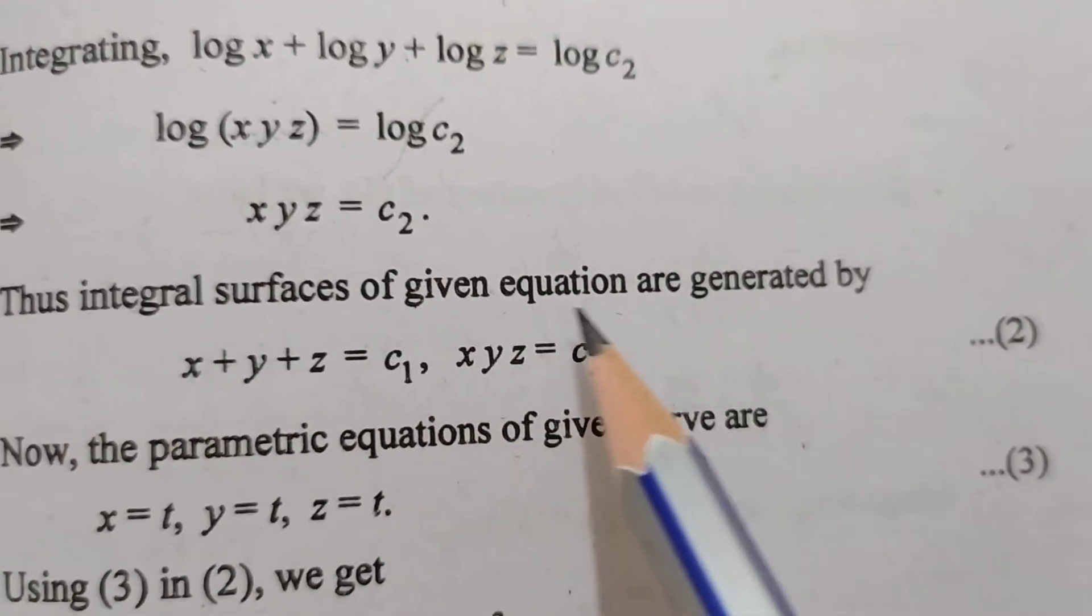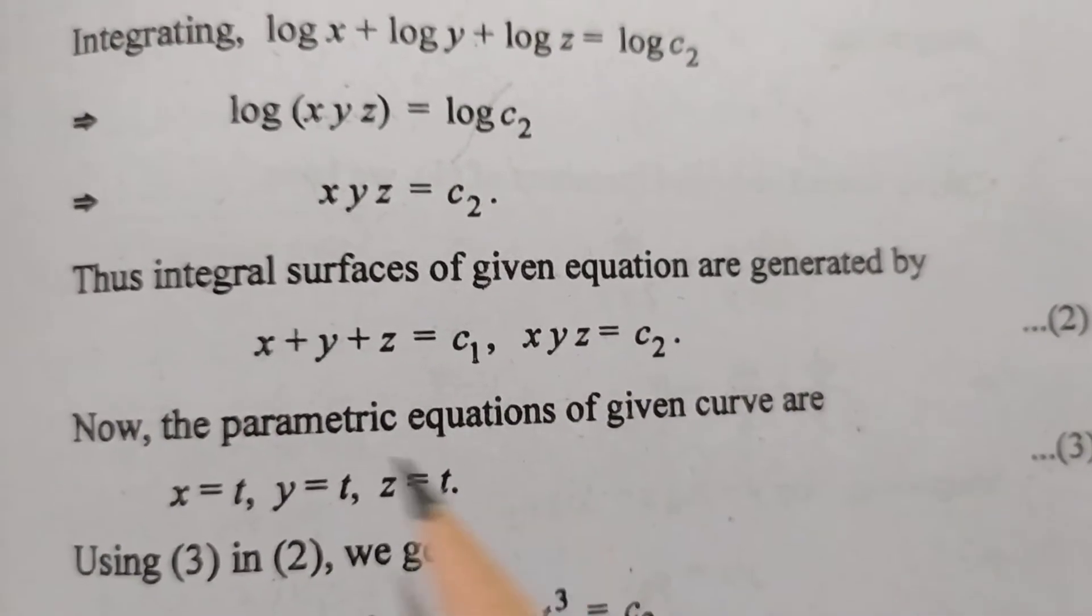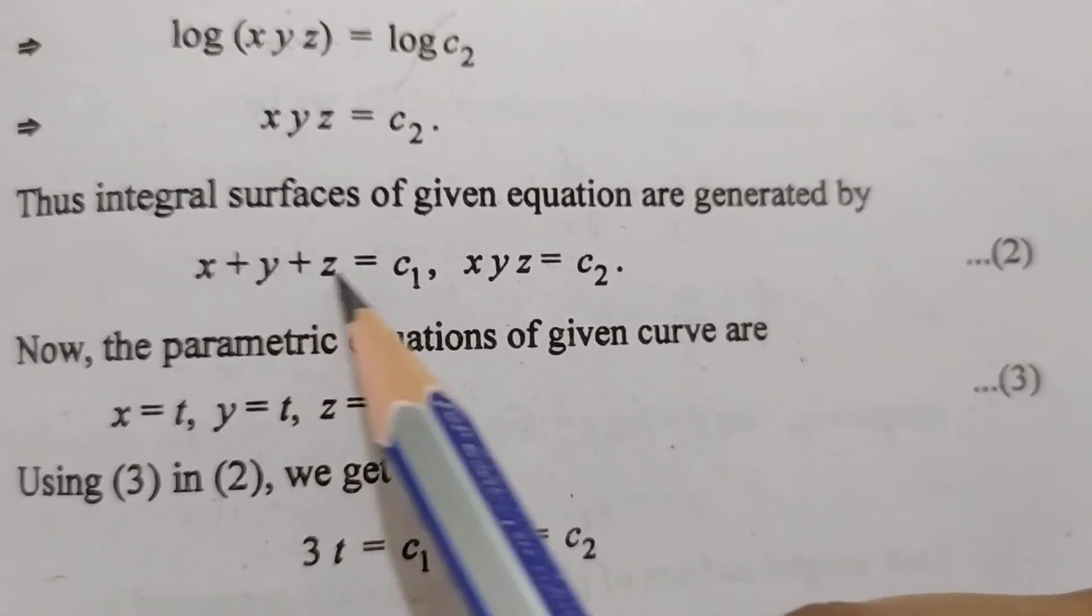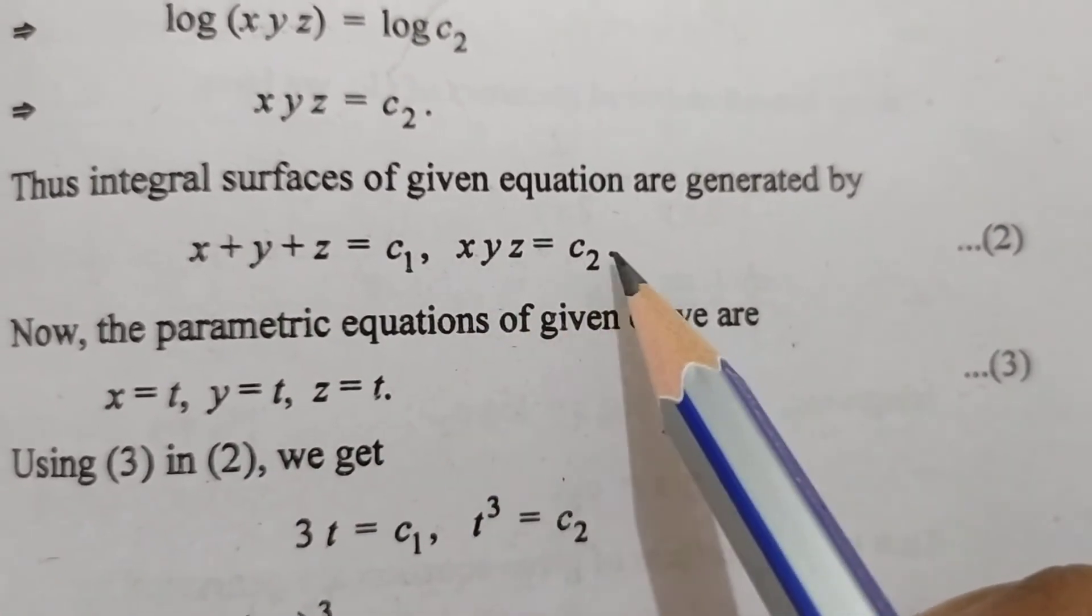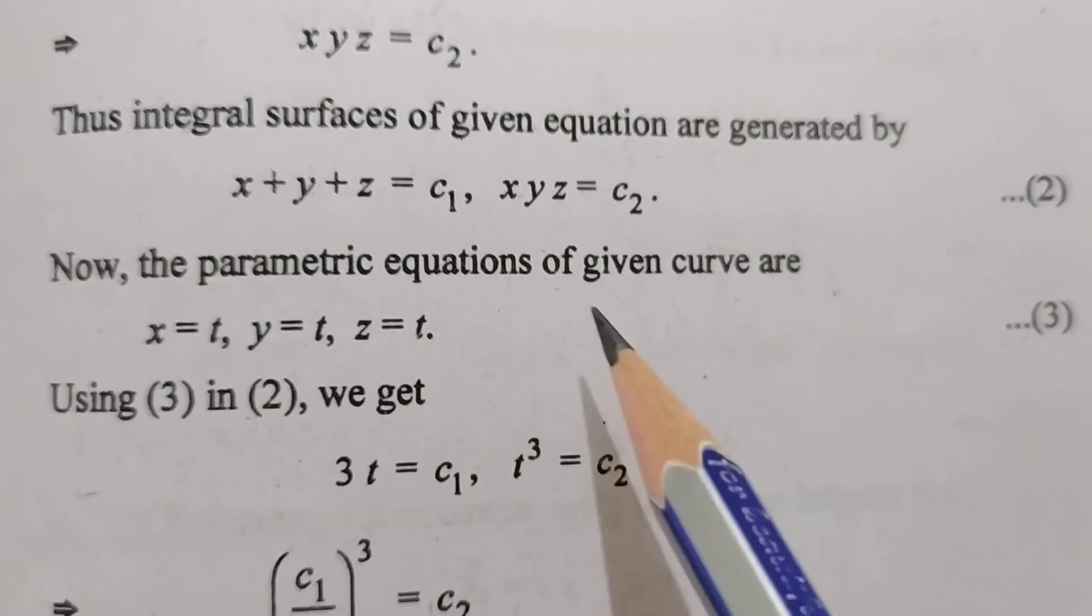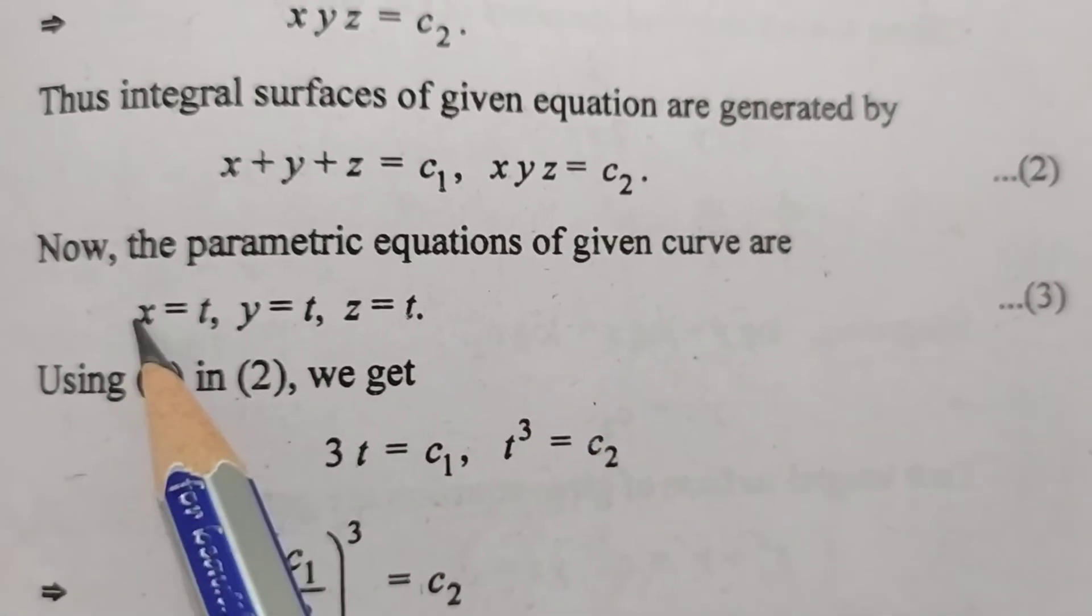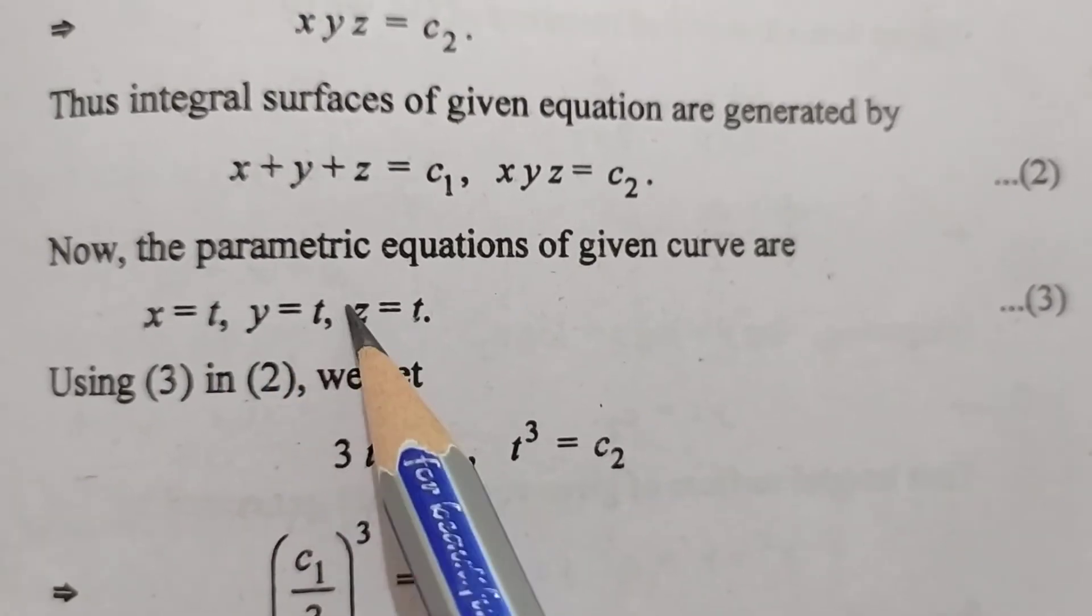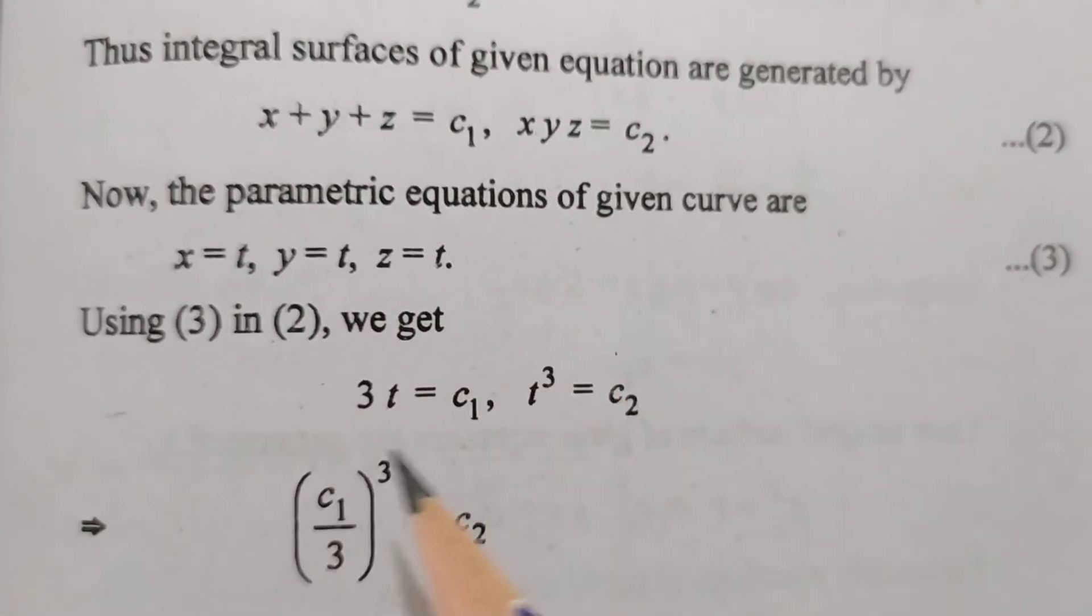Thus, integral surfaces of the given equation are generated by x+y+z=c1 and xyz=c2, equation (2). Now, the parametric equations of the given curve are x=t, y=t, z=t.